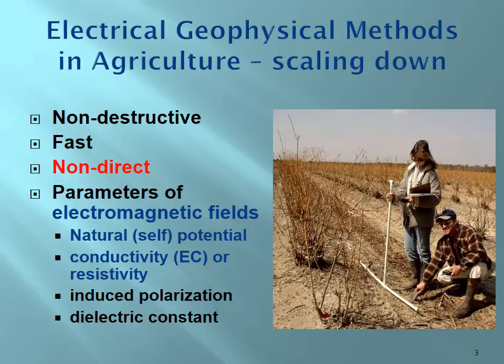To use electrical geophysical methods in agriculture, we can bring many benefits to our studies. First of all, all of those methods are non-destructive, so we don't need to collect soil samples — we can just take measurements from the soil surface. The methods are also very fast. However, all methods are non-direct: they don't directly measure the properties of interest in agriculture such as soil bulk density or pH. Instead, they measure parameters of electromagnetic fields, such as natural electrical potential (self-potential) and electrical conductivity or resistivity.